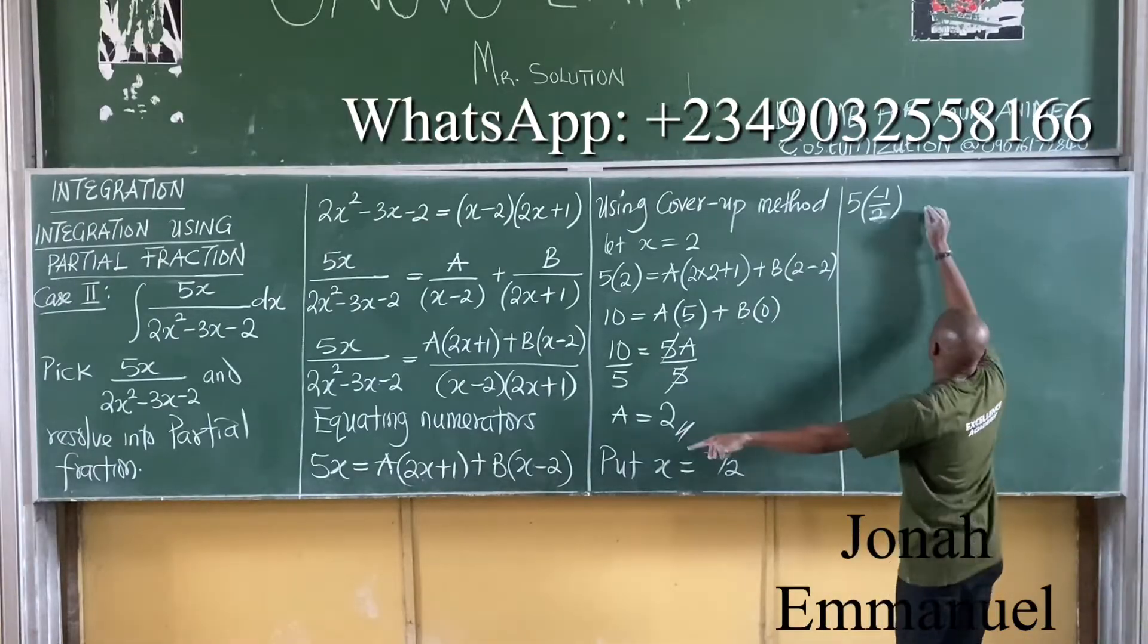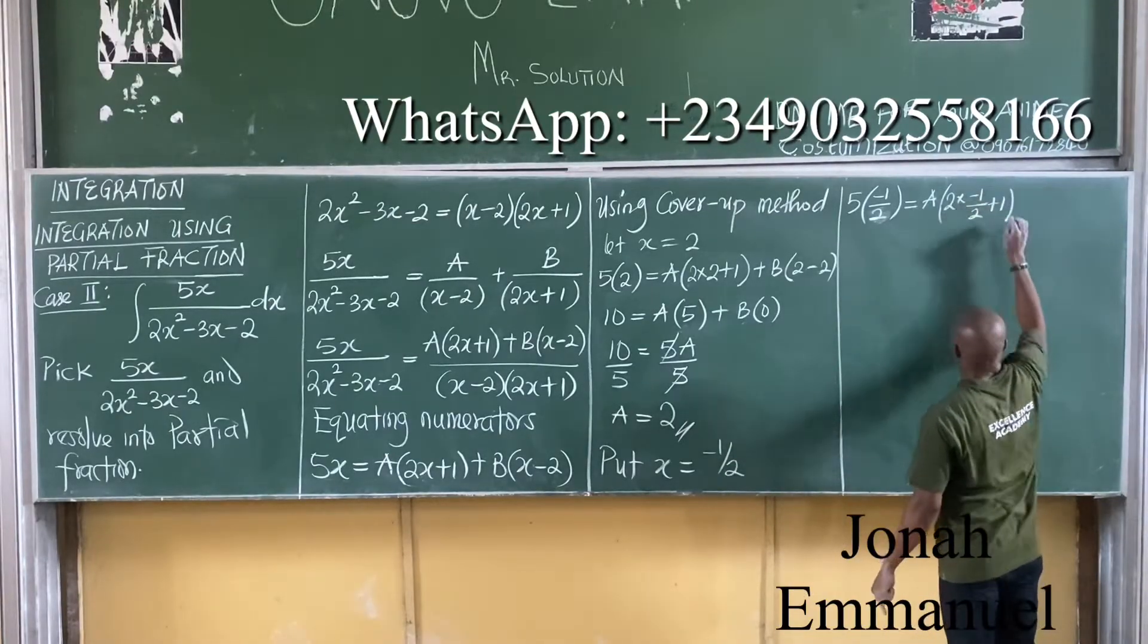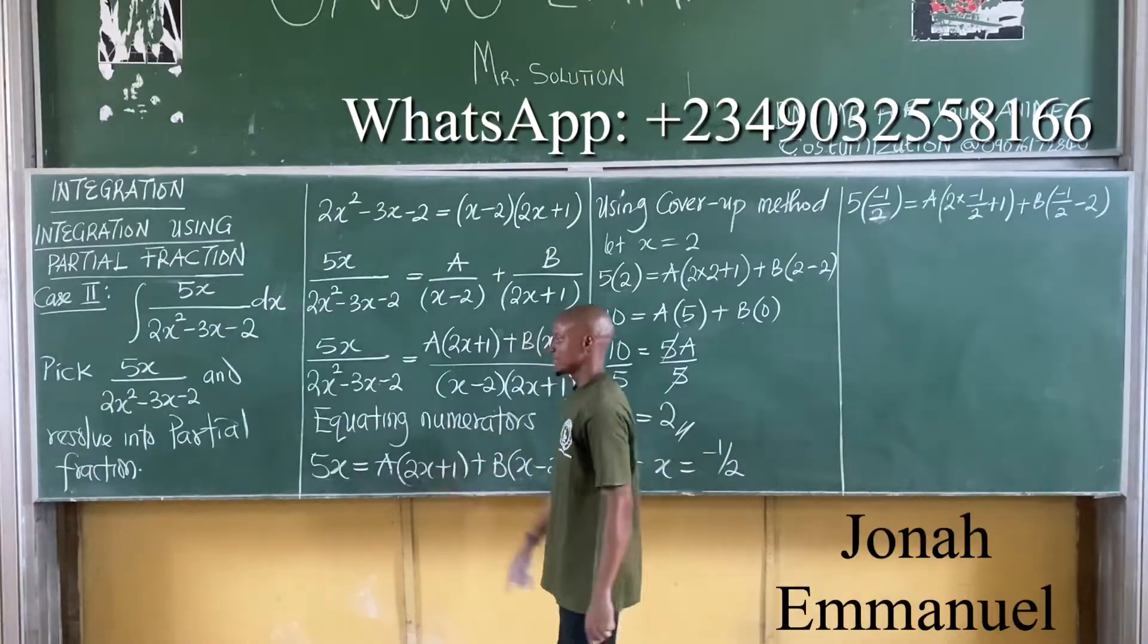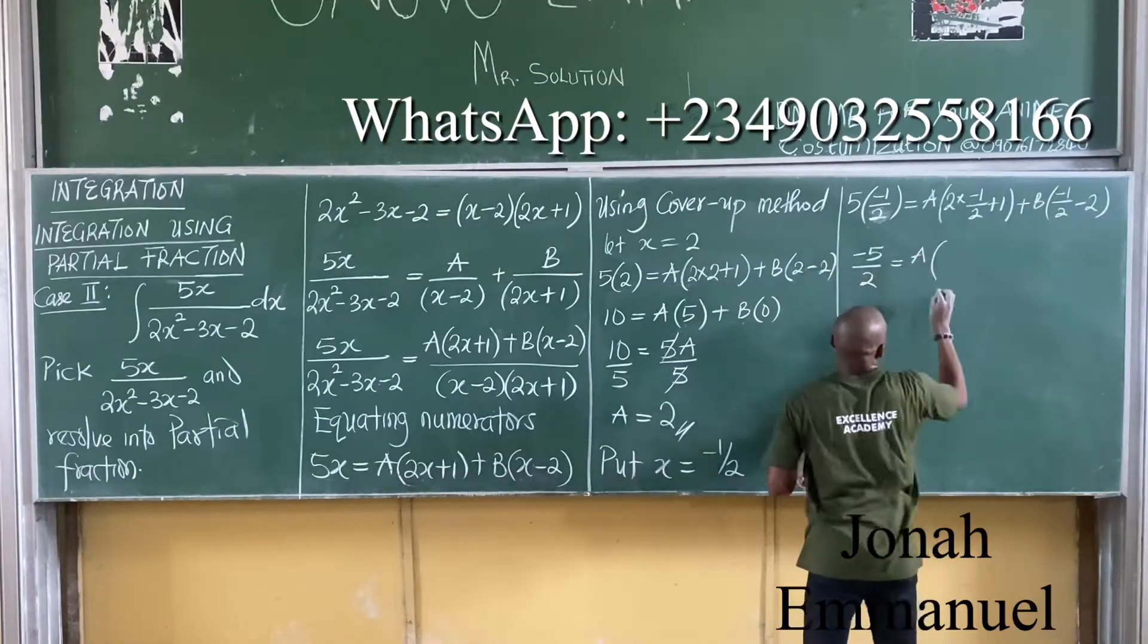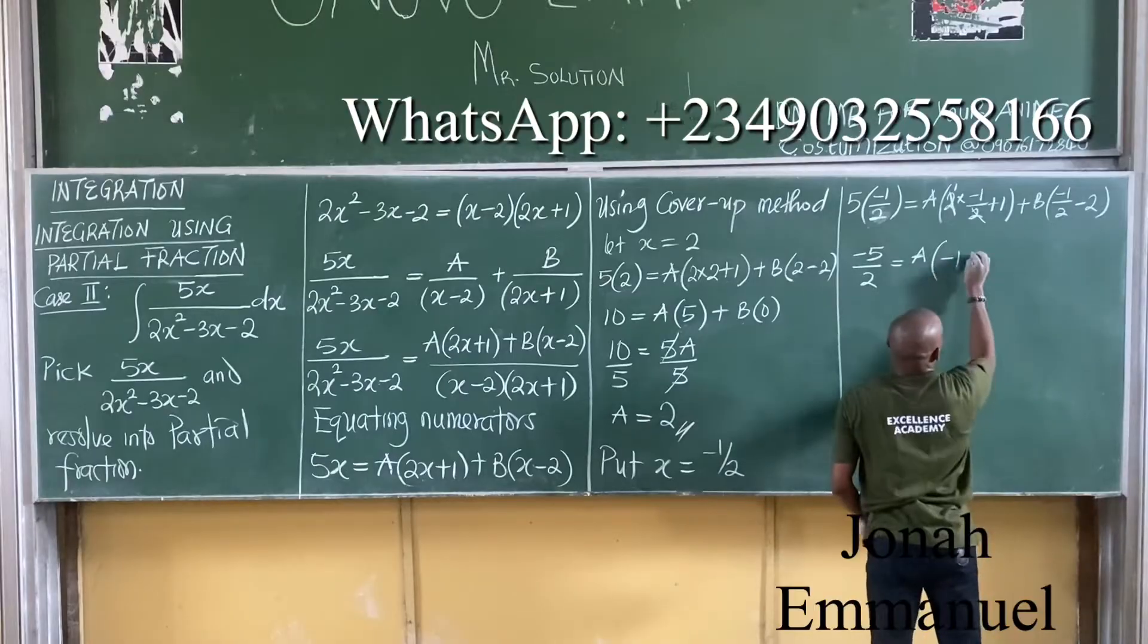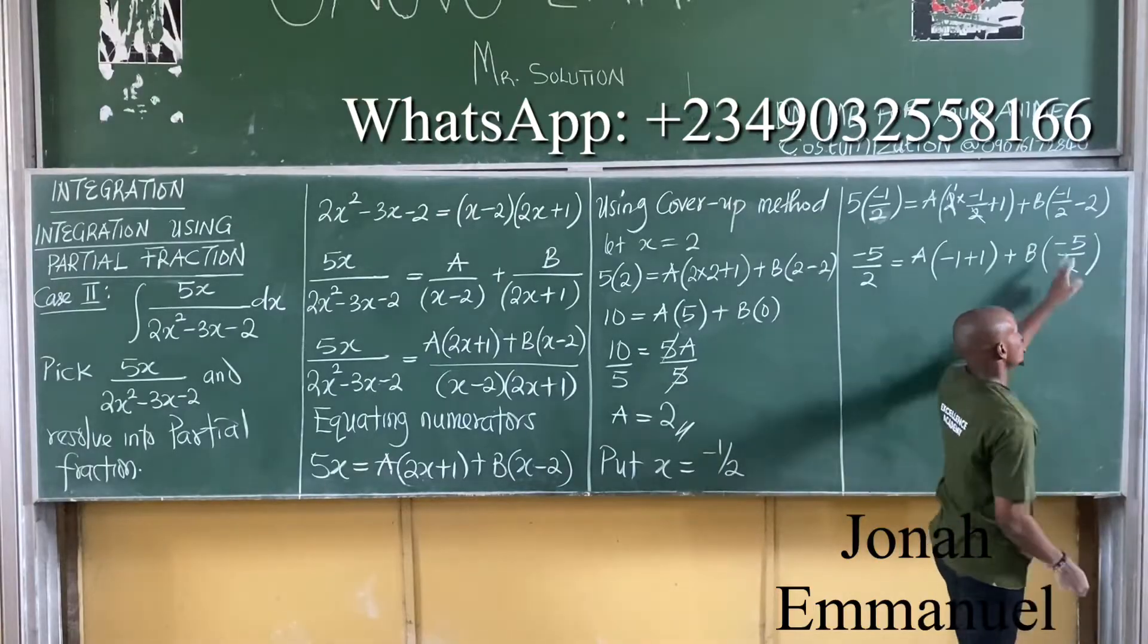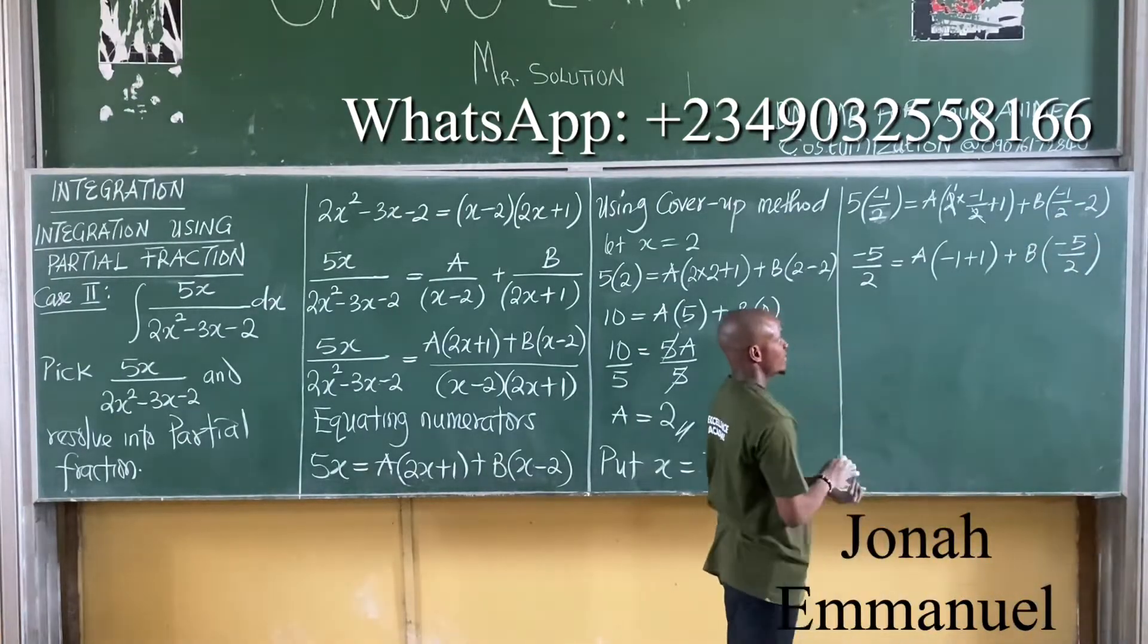That gives you 5 into x minus 1 over 2 is equal to A into 2 times minus 1 over 2 plus 1 plus B into x minus 1 over 2 minus 2. This now gives you minus 5 over 2. This one is equal to A into, from here this cancels this off, it becomes 1 times minus 1 is minus 1 plus 1. Plus B into, what do I have here? This is minus 1. Minus 5 over 2. Your short cut is 2 times 2 is 4, minus 1 minus 1 is 2, minus 5 over 2.